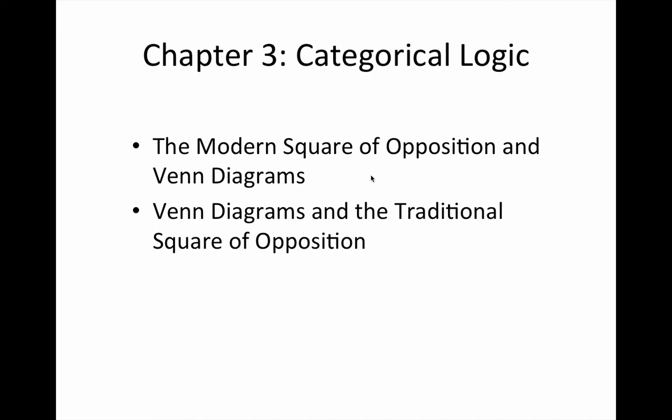We now move on to look at the immediate inferences known as the square of opposition. Recall from our previous discussion of existential import that the universal proposition, affirmative and negative, can be understood as allowing for or assuming a member of the subject class to exist, or allowing for the existence of a member of the subject class or not.